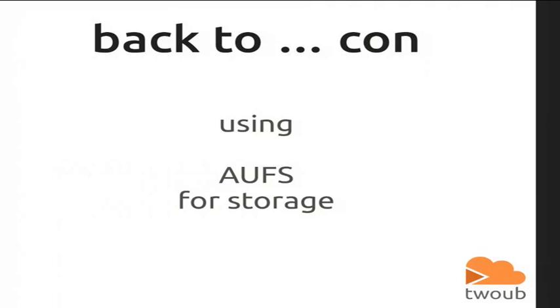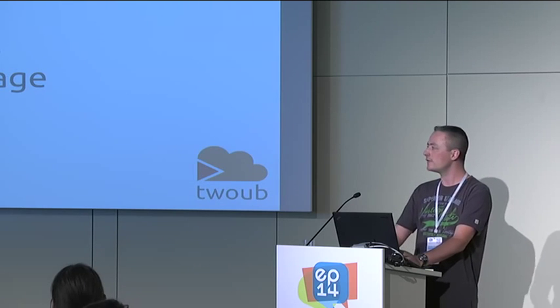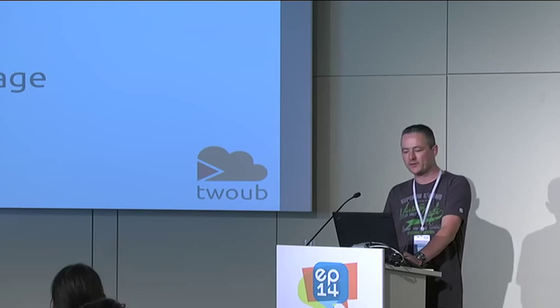It's using AUFS for storage. This is a layered file system. You can mount nearly any number of ordinary directories on top of another, and they derive from each other. That means if you have a file A in the lower directory and a file B in the higher directory and you mount both, then you see file A and file B. They do some magic with deleted files and so on. This is a very stable solution.